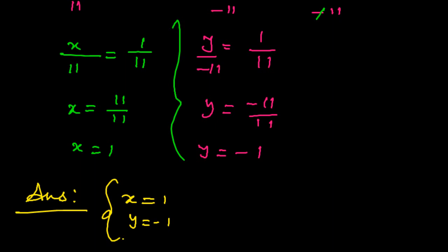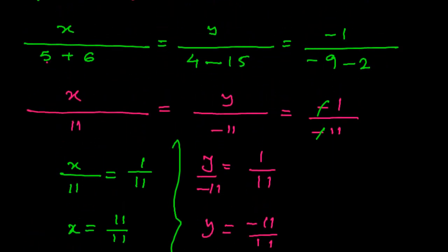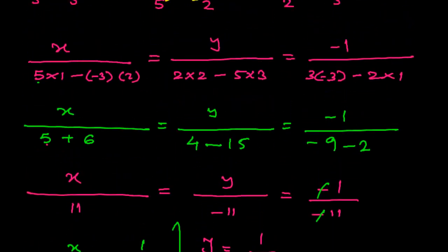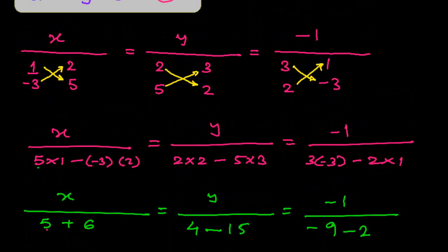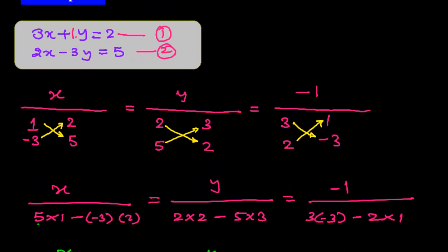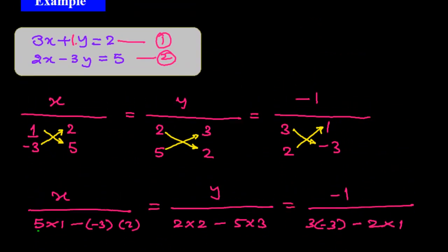In this way, we can easily find out the answer through the cross multiplication method. It is the easiest method out of the three. We can easily find out the solution of simultaneous linear equations of two variables through this cross multiplication method. It is a very neat and easy method.